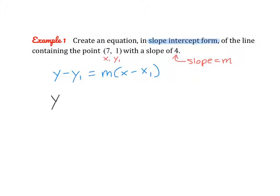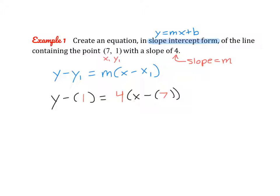Let's prepare for the substitution. Substituting in, y1 is 1, m is 4, and x1 is 7, giving us: y minus 1 equals 4 times (x minus 7). This is the equation in point-slope form. But remember, they want our final answer in slope-intercept form — y equals mx plus b — so now we need to solve for y.